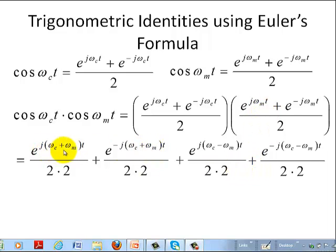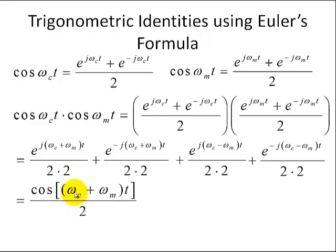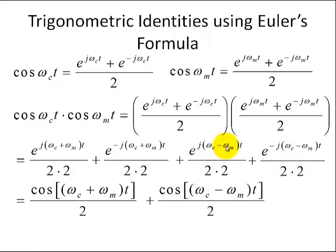Now we take a look at the first two terms, and you can see it follows the form of our cosine function. The argument for our cosine is omega C plus omega M quantity multiplied by T, weighted by one half. Similarly, the last two terms give cosine of omega C minus omega M times T. So applying the cosine definition, you can see that the multiplication of these two functions with different frequencies results in the sum and difference frequencies. This is our trig identity.